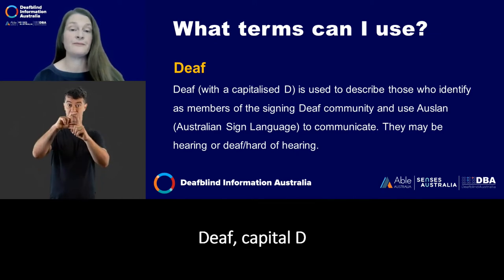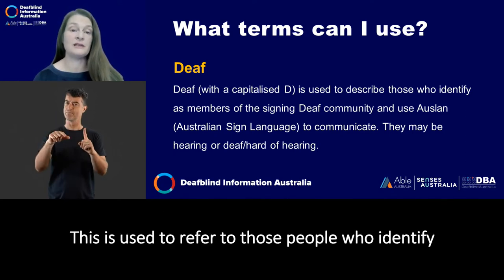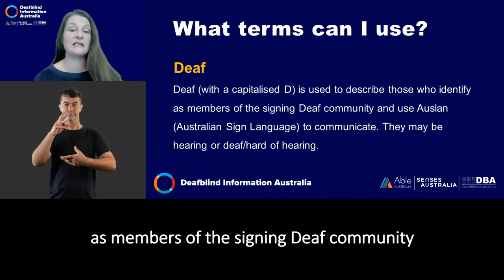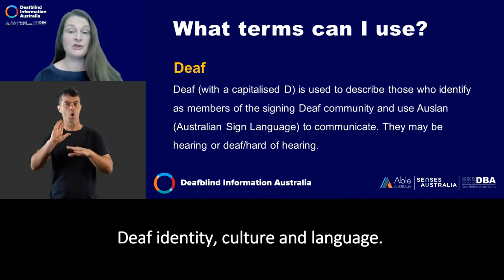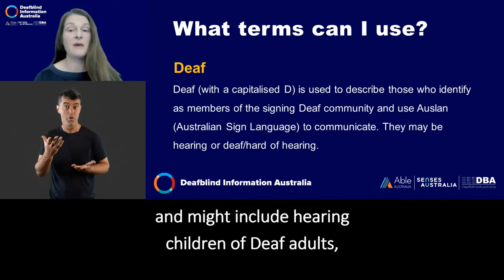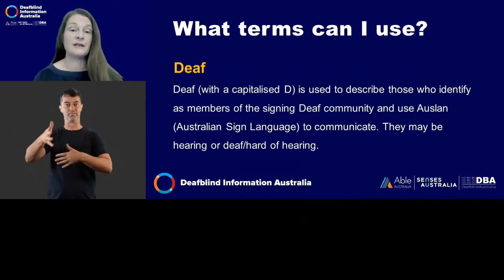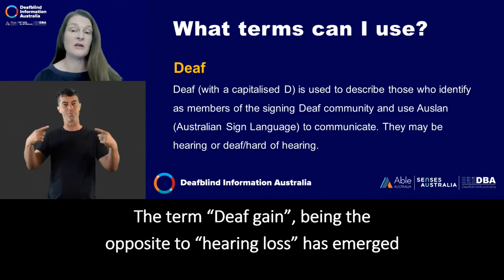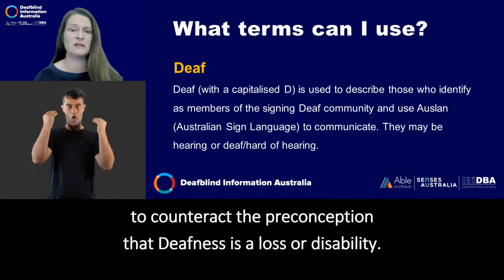Deaf with a capital D. Another important term to understand is Deaf with a capital D. This is used to refer to those people who identify as members of the Signing Deaf community and have knowledge of and respect for Deaf identity, culture and language. Members of this community can be hearing and might include hearing children of Deaf adults, sign language interpreters and other hearing sign language users. The term Deaf gain, being the opposite to hearing loss, has emerged to counteract the preconception that Deafness is a loss or disability.